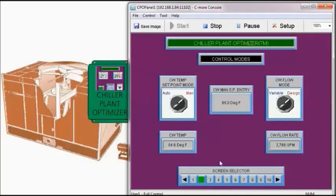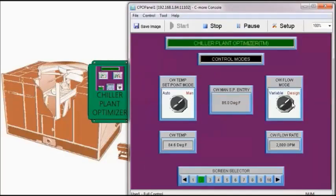And the condenser water flow mode is in design. That is, we have a fixed condenser water flow mode right here. And we also see our flow rate, it's actually averaging around 2,800 GPM. The actual design is 2,808 GPM.